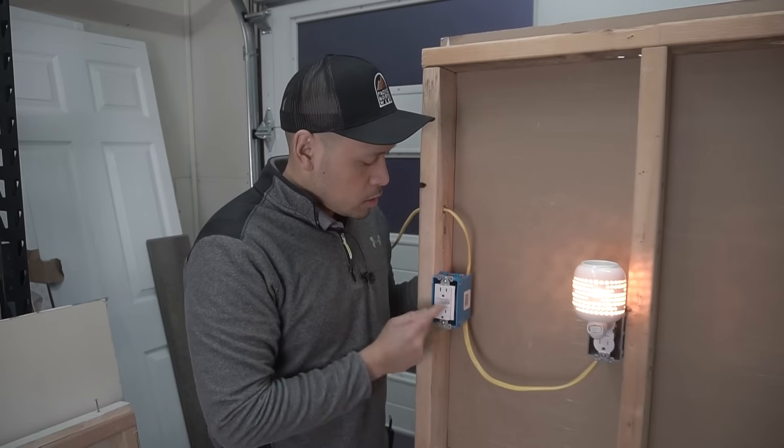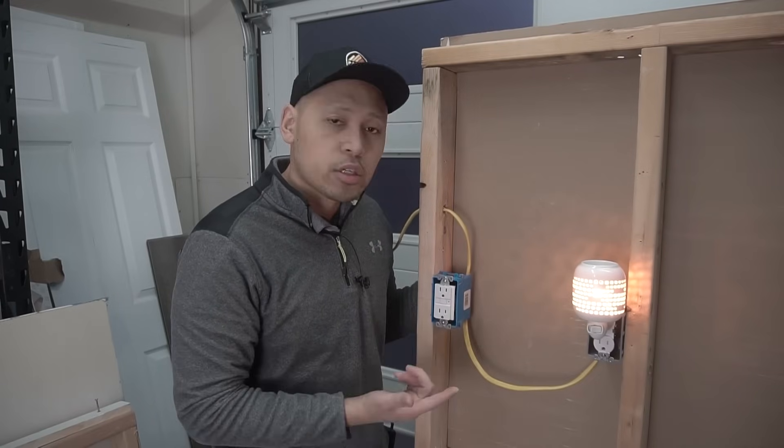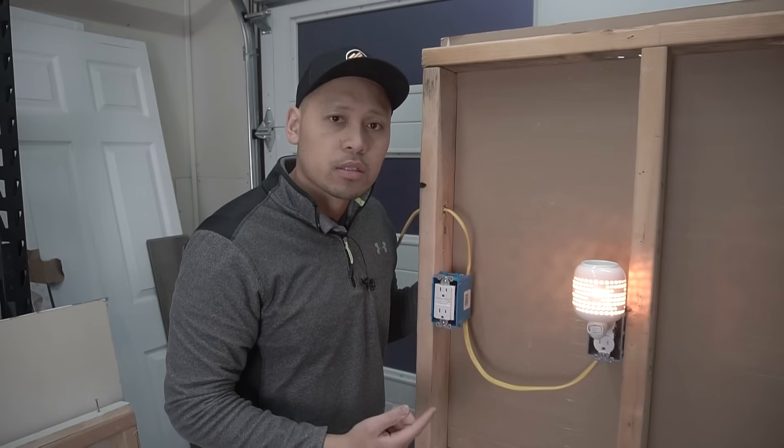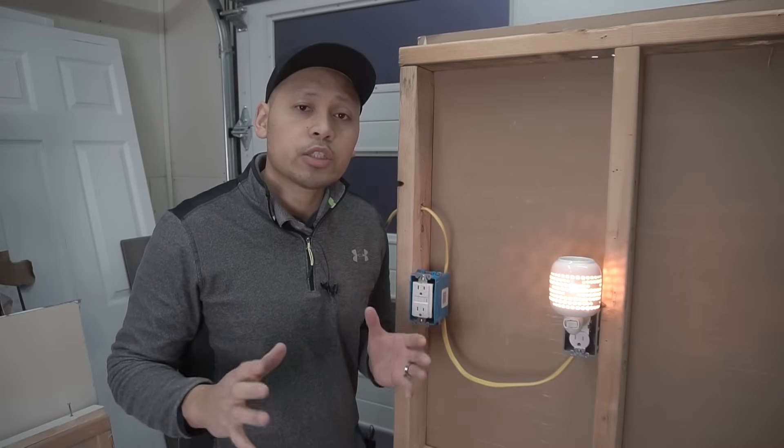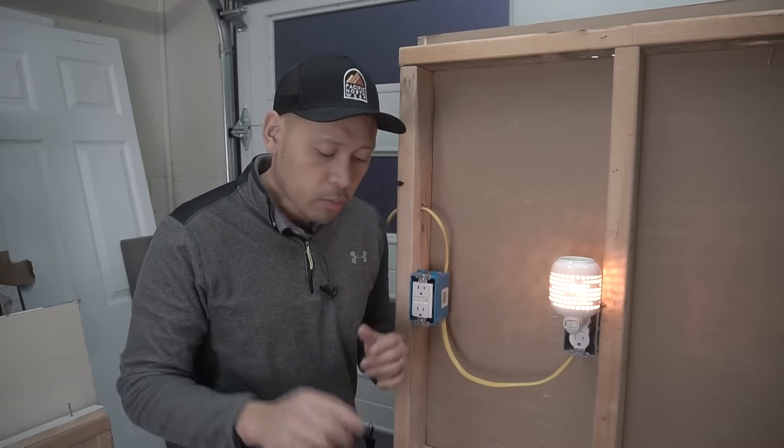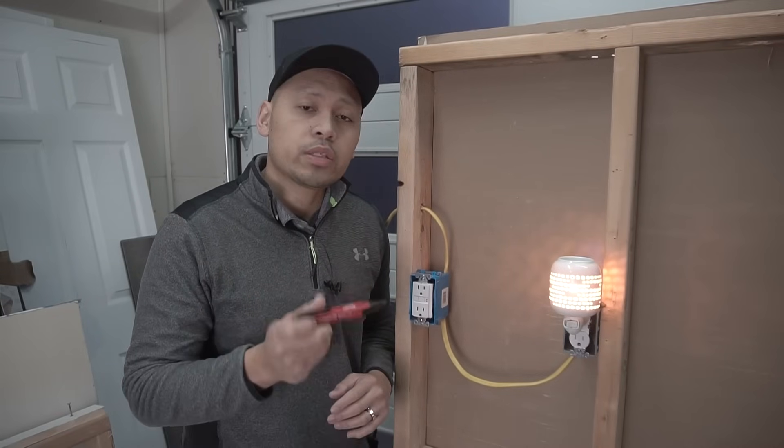So if this trips right there, in case that trips, this receptacle is still going to be on. Again, before starting any type of work, make sure you turn off the power from your circuit breaker and make sure that you always test the lines with your voltage detector.